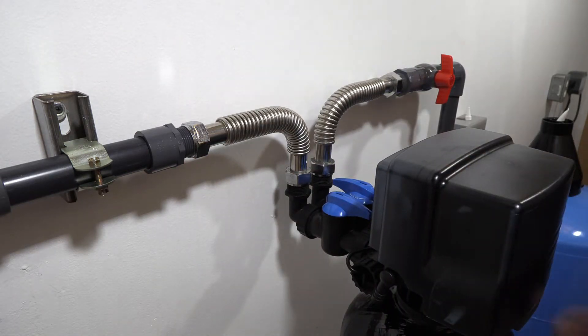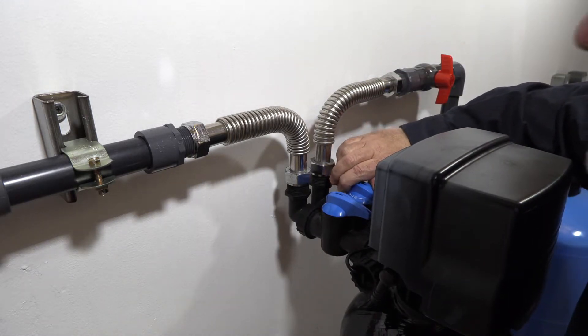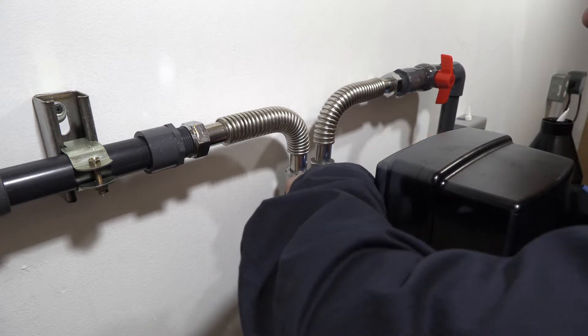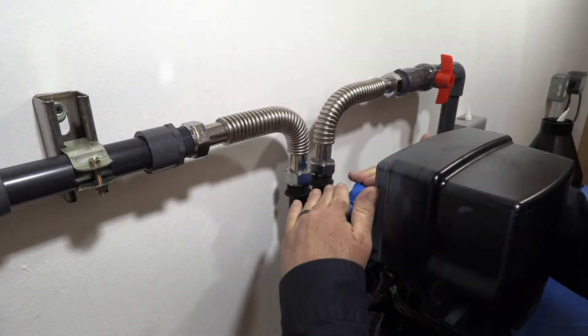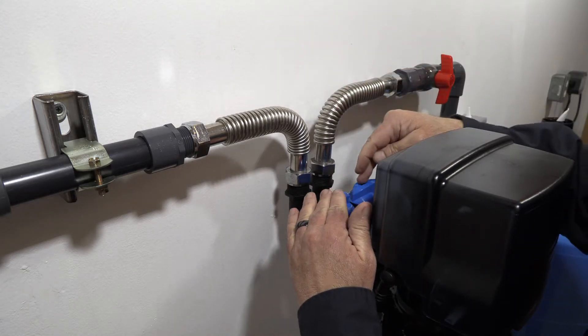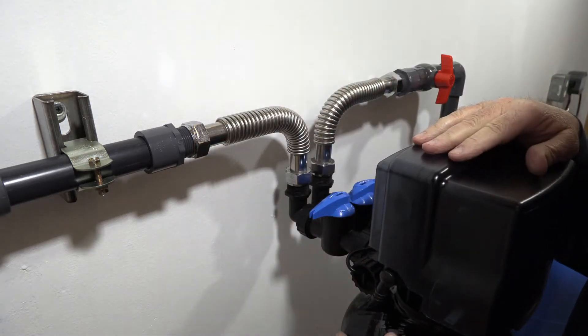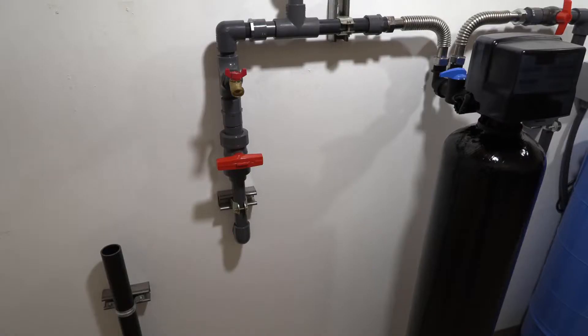Now one thing we want to do is make sure we put our bypass valve in the bypass mode. We'll do that by turning the valves so the handles face each other. So this is in bypass mode now. What that will do is the water will come in through the valve and out. It will not go into the tank yet, so we've still got that isolated.